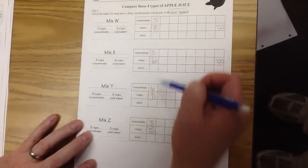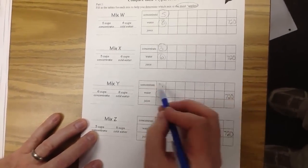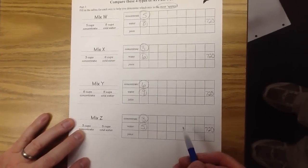So instead of looking at the water, let's look at the concentrate instead: 5, 3, 6, and 3. Those are all smaller numbers.